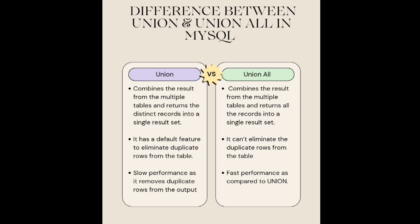Union has slow performance as it removes duplicate rows from the output. Whereas Union All has fast performance as compared to Union.